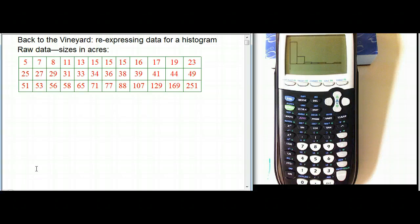This is an example of re-expressing data for a histogram. It comes out of a problem that I did for a previous video about sizes of vineyards. It's from Bach, Bellman, and DeVoe, like most of these videos are.